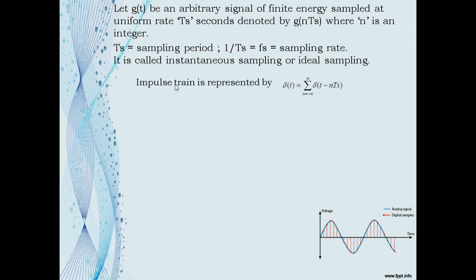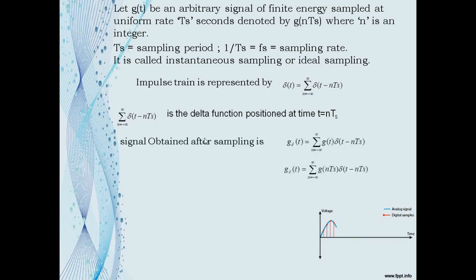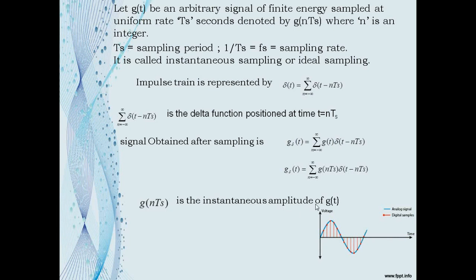The impulse train considered is δ(t) = Σ (n = −∞ to ∞) δ(t − nTs), where δ(t − nTs) is the delta function positioned at time t = nTs. The signal obtained after sampling is G_δ(t) = Σ (n = −∞ to ∞) G(t) δ(t − nTs), which simplifies to G_δ(t) = Σ (n = −∞ to ∞) G(nTs) δ(t − nTs), where G(nTs) is the instantaneous amplitude of G(t).